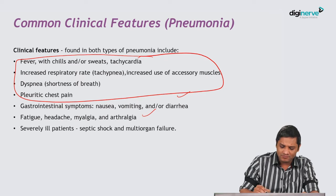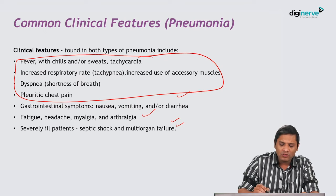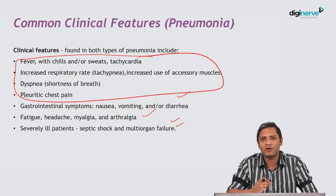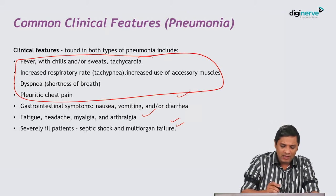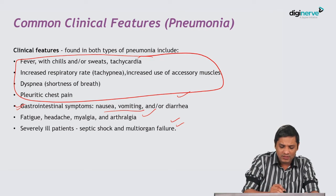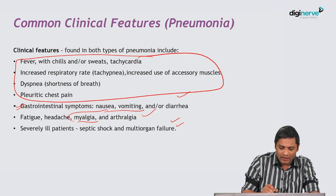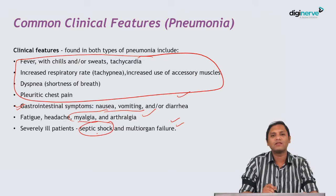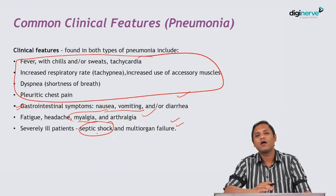Apart from that, there are some non-specific manifestations involving other systems like GI system involvement. You will have nausea, vomiting, fatigue, headache, myalgia, and septic shock. Ultimately, the patient will go into septic shock because from the lungs the organism will gain access to the blood, causing bacteremia, which leads to septic shock.